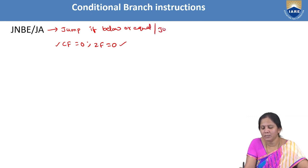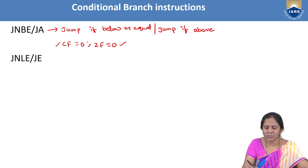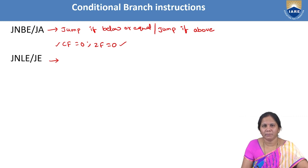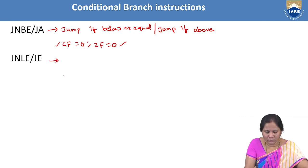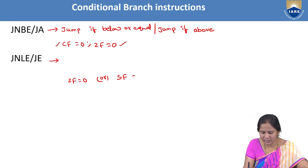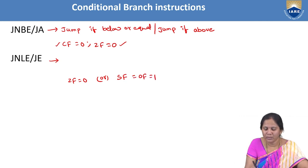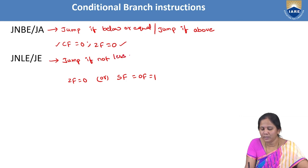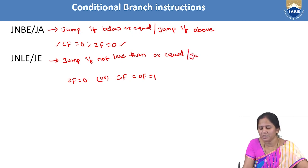The next conditional branch instruction is JNLE (jump if not less than or equal) and JG (jump if greater), where ZF = 0 and SF = OF. When these conditions are met, the control will branch to the specified address.